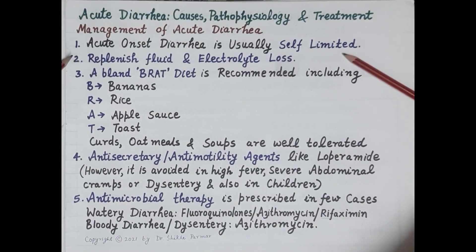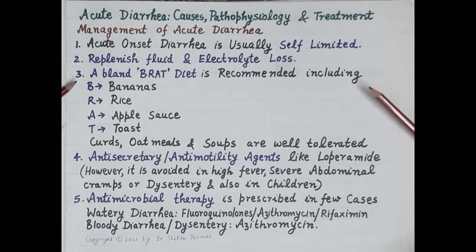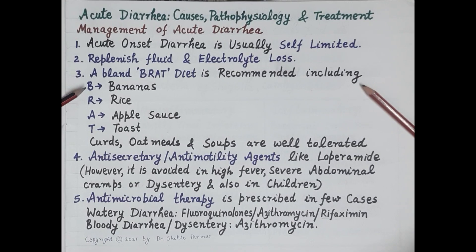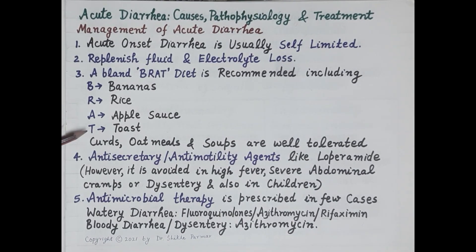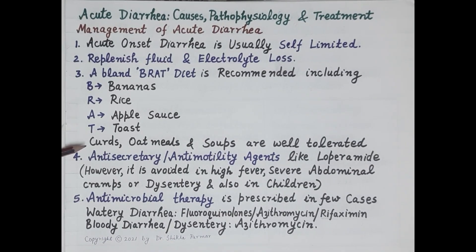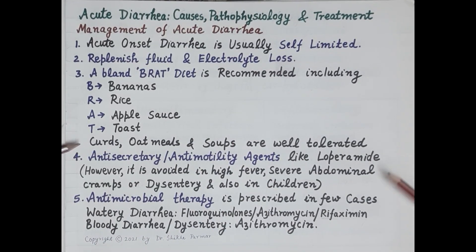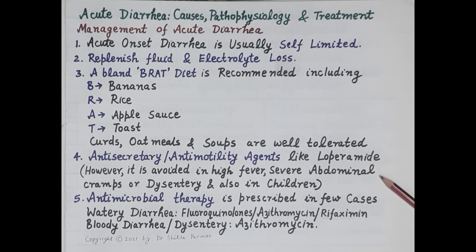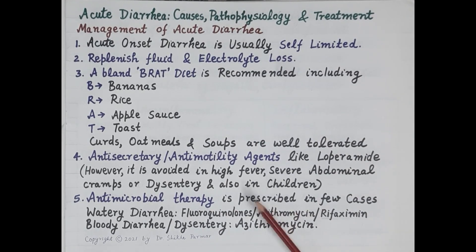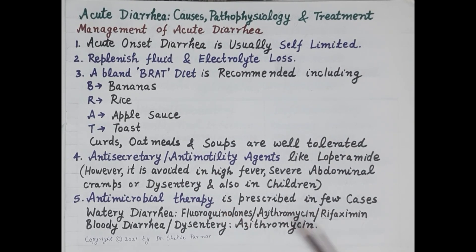Eating food lower in fiber may also help in relieving diarrhea. A bland BRAT diet is recommended: B stands for bananas, R for white rice, A for applesauce, and T for white toast. Curds are a very good source of beneficial bacteria such as Lactobacilli. Oatmeal and soups are also well tolerated. Anti-secretory, anti-motility agents like loperamide can also be administered if required, as they reduce the duration of acute diarrhea. However, loperamide should be avoided in high fever, severe abdominal cramps, dysentery (blood in stools), and in children.